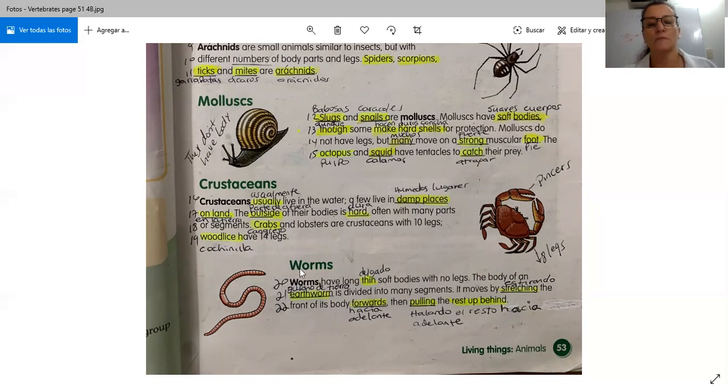Worms. Worms. Los worms son los gusanos. Worms have long, thin, soft bodies with no legs. The body of an earthworm is divided into many segments. It moves by stretching the front of its body forward, then pulling the rest up behind.